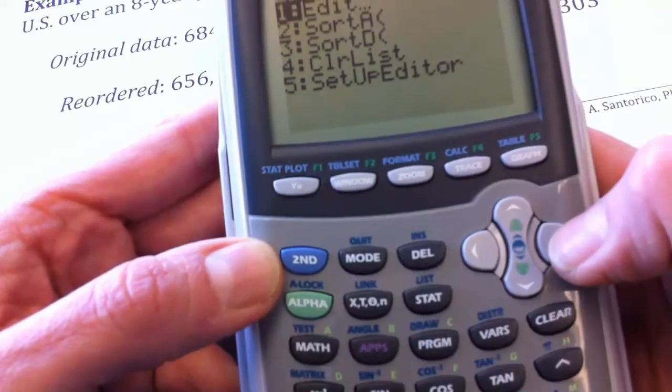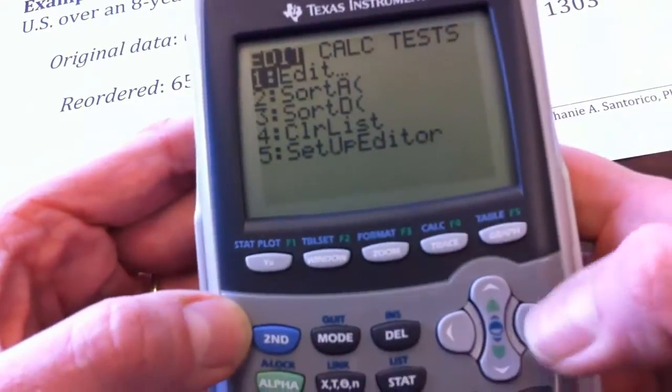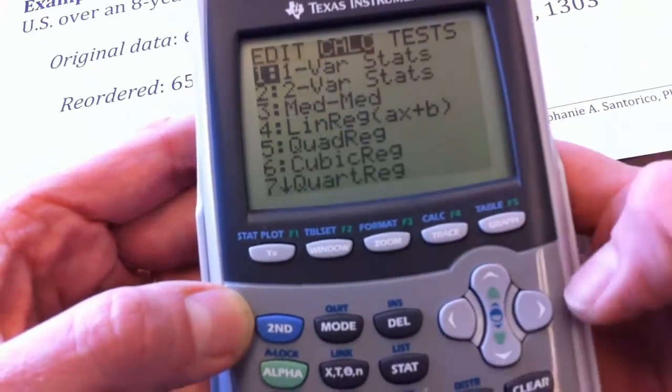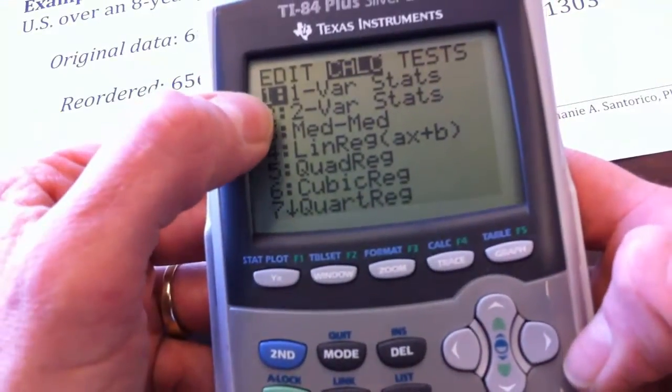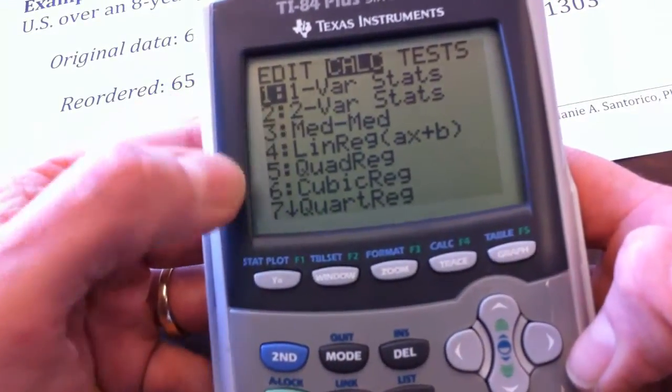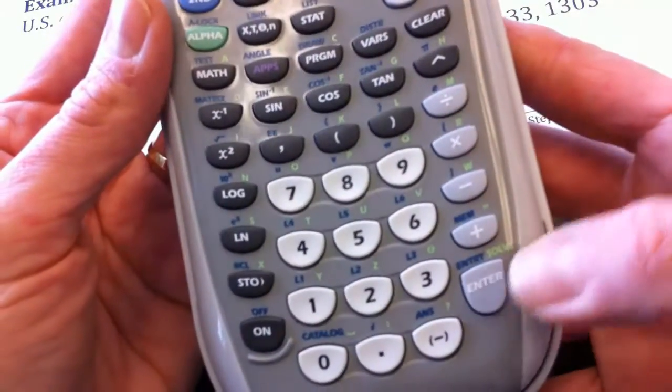I'm going to hit stat. This time I want to calculate something, so instead of editing data, I'm going to use this button to go over to calculate. The one that I want is already highlighted, that's one variable statistics, so I'm just going to hit enter.